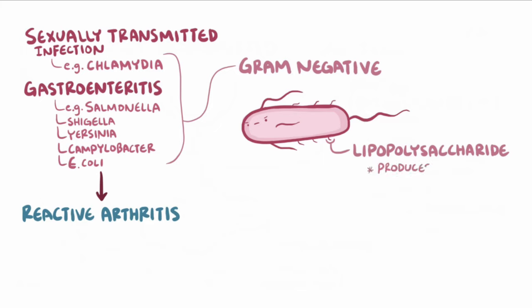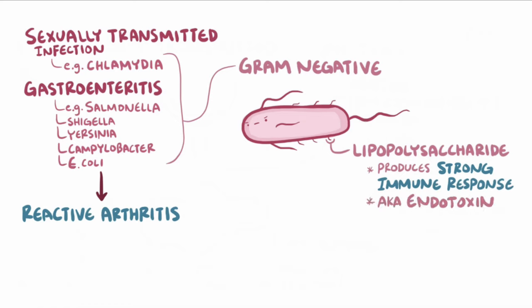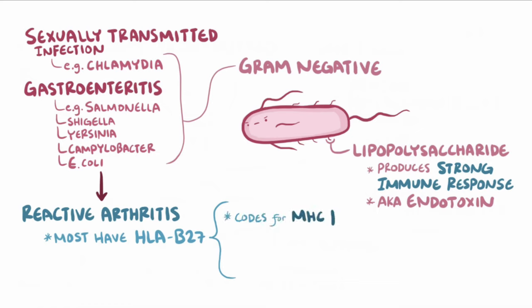These LPS molecules produce a strong immune response, so much so that their other name is endotoxin. Also, most individuals with reactive arthritis have the specific gene HLA-B27, which is one of many genes that has code to make MHC class 1 receptors. HLA-B27 is also associated with other inflammatory diseases, like psoriasis and ankylosing spondylitis.